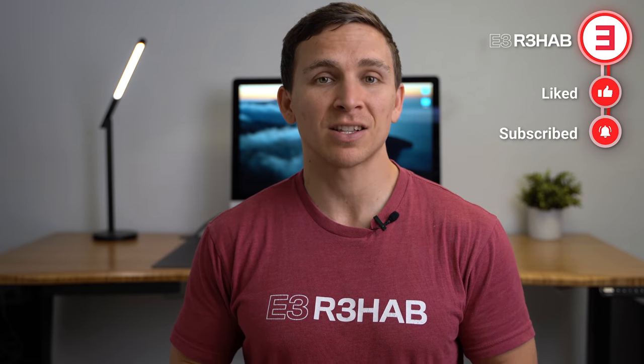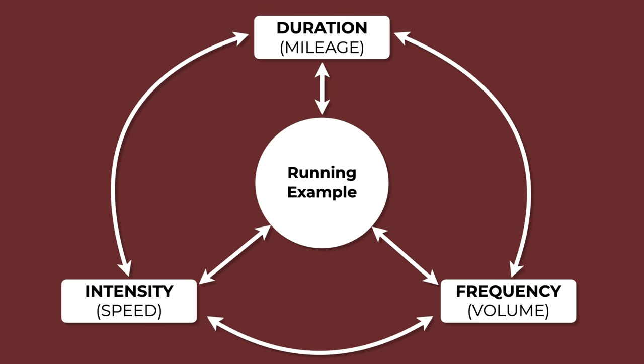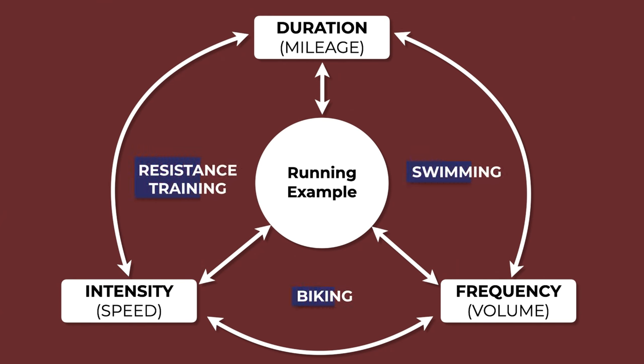Load management. The most important aspect of rehabilitation for tibialis posterior tendinopathy is load management. You need to reduce or modify aggravating activities initially to reduce the overall load experienced by the tibialis posterior tendon, before gradually incorporating exercises and other functional activities to build up its capacity. If you're the runner in this example, you need to manipulate your mileage, speed, and/or frequency so that you're able to run without a worsening of symptoms. If you have to scale back significantly, you can implement other forms of training like biking, swimming, and resistance training. I highly recommend tracking daily steps to understand your baseline level of function and tolerance, and then gradually build it up over the course of weeks and months.